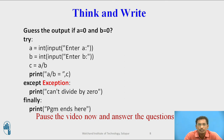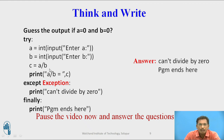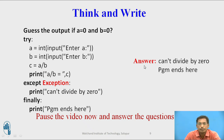Think and write — you can pause the video and answer: guess the output if a = 0 and b = 0. The try block has a = int(input('Enter a')), b = int(input('Enter b')), c = a / b, and print(a / b). The except block prints 'Can't divide by 0', and there is a finally block. The answer: since b is 0, an exception occurs for the division statement, control jumps to the except block and prints 'Can't divide by 0'. After the except block, the finally block executes and prints 'Program ends here'. So the output is 'Can't divide by 0' and 'Program ends here'.